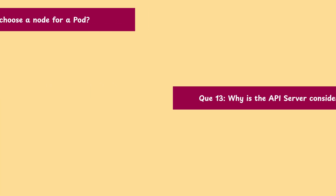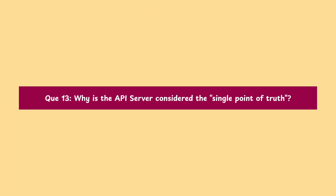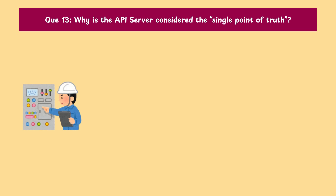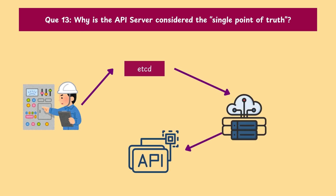Question 13: Why is the API server considered the single point of truth? Because all components talk to it and it reads and writes to etcd. Nothing happens in the cluster without going through the API server.